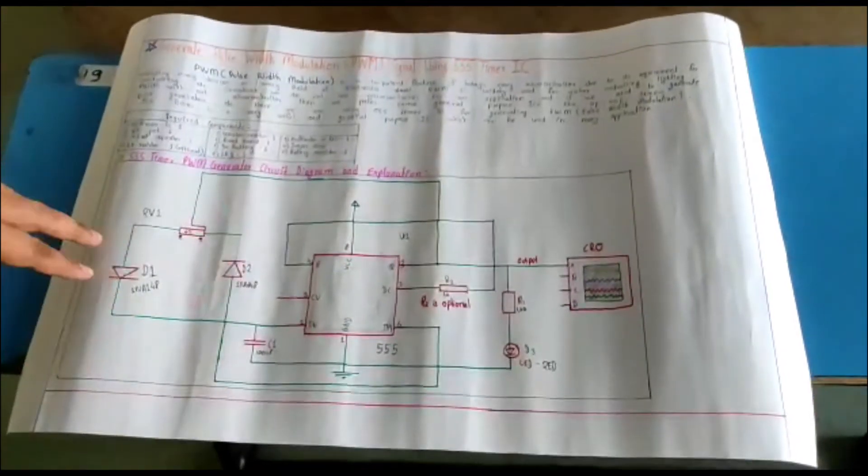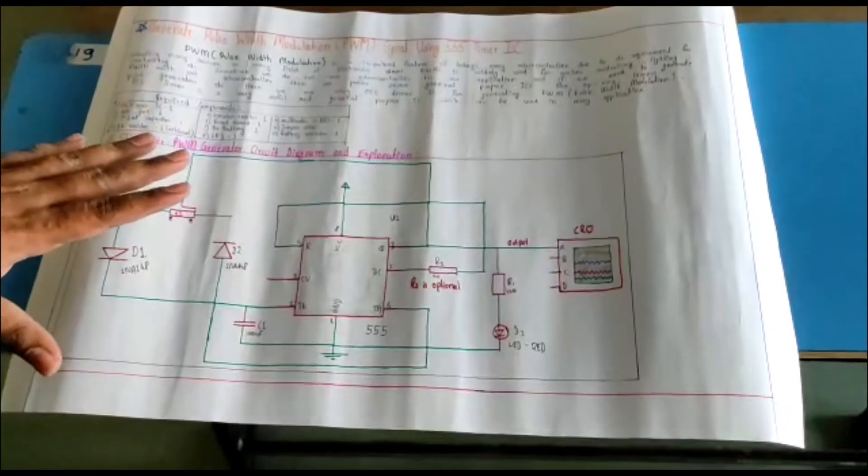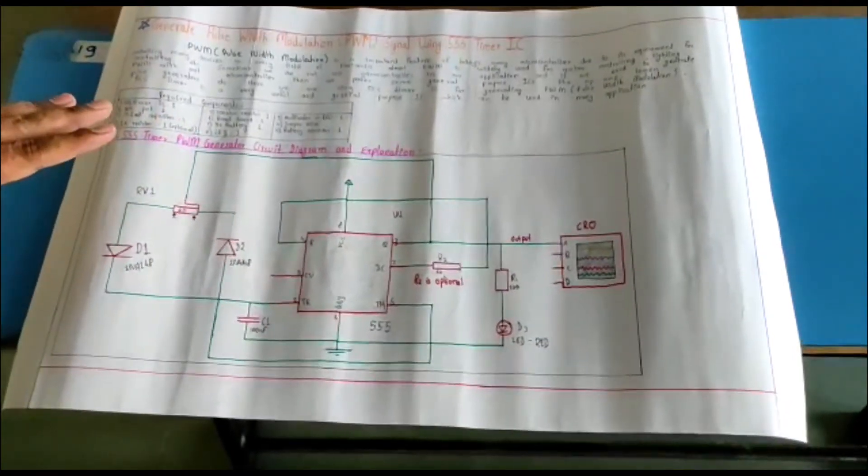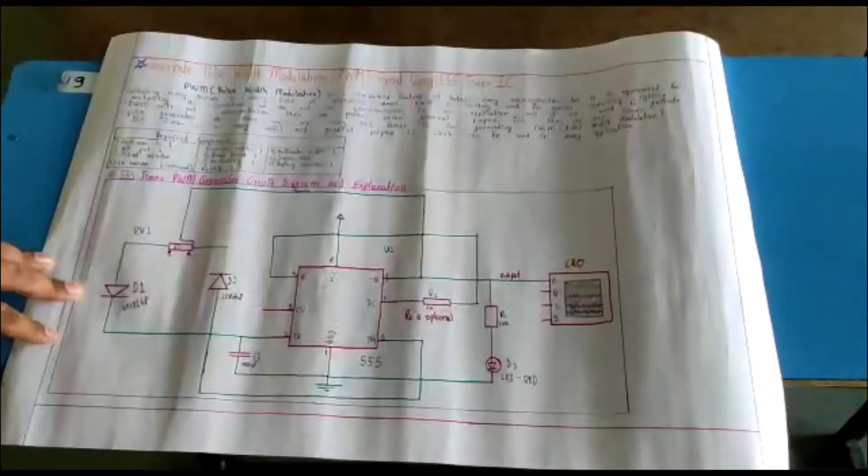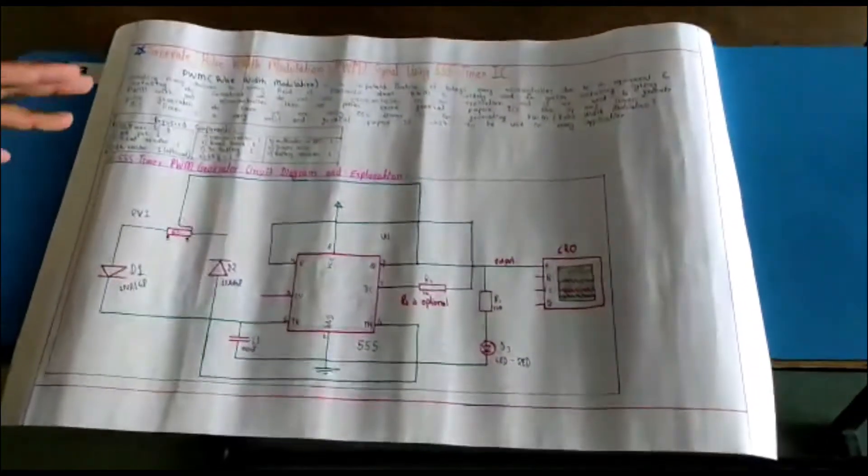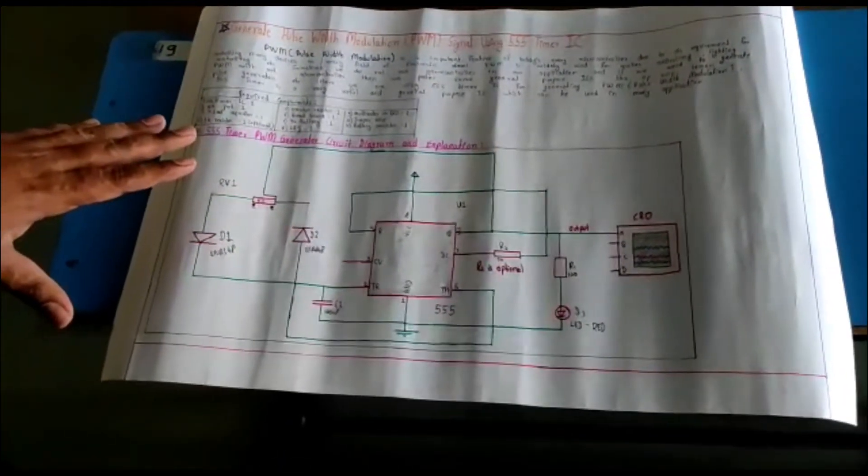In this PWM generator circuit, we use a 555 timer for generating the PWM signal. Here we have controlled the output frequency with a capacitor. We have used variable resistors in place of fixed resistors for changing the duty cycle of the output signal.